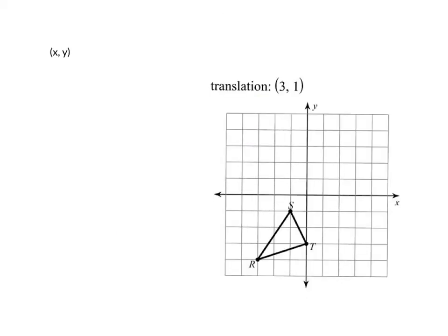In this example, we still have a graph. We still have a triangle on it. We have the word translation. So we know that we're going to be sliding this. And notice that there are no words anymore. It's just simply a parentheses with two numbers in it.